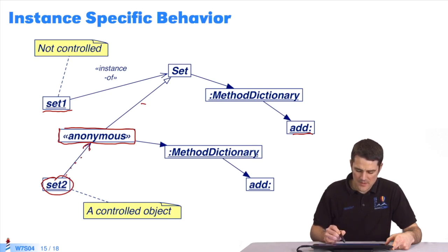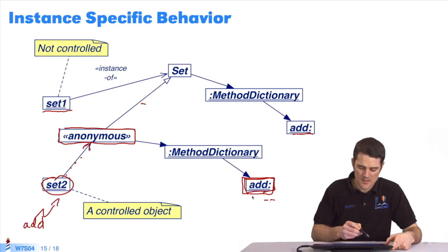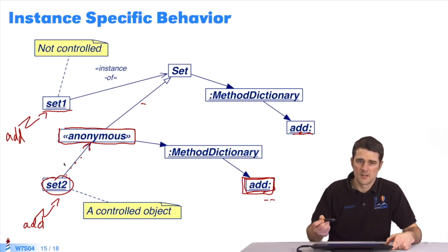In its method dictionary, I'll redefine the method add, by giving it a particular behavior. Now, if I send the message add to the object set2, this method will be selected. And it will have a specific, different behavior from the method add, here if we had sent the message to this set. So, we have two sets that react differently to the message add.